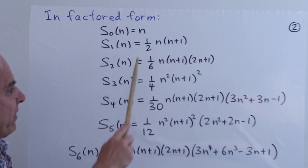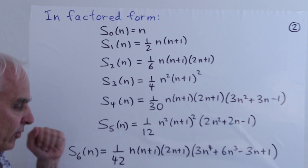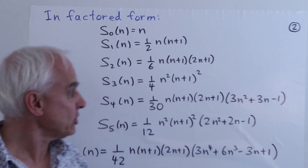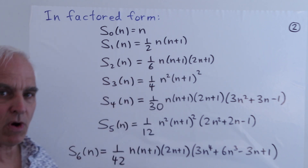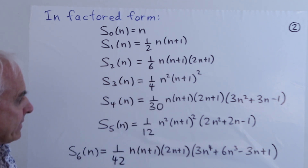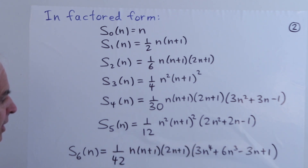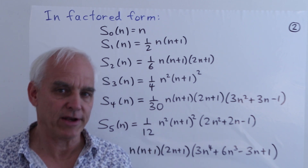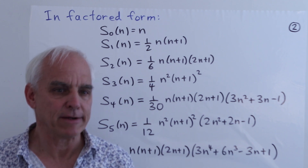S_3(n) is the square of S_1: one-quarter n-squared times (n+1)-squared. There is a kind of pattern, but the factorization is actually quite limited — we do get factors n, n+1, and 2n+1, but those are the only regularly occurring ones. Otherwise the factors end up being just longer and longer, so there's reason to think that writing them as polynomials in n without factored form is a little bit superior.